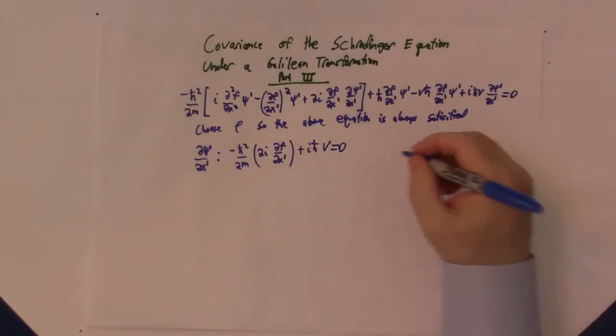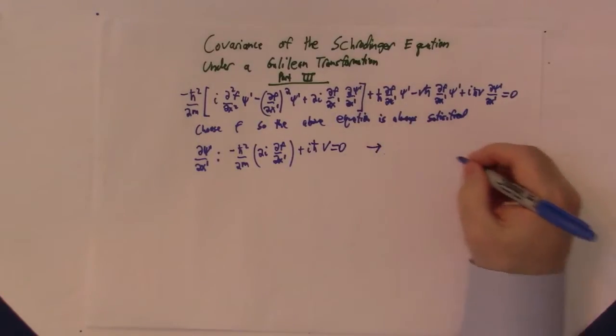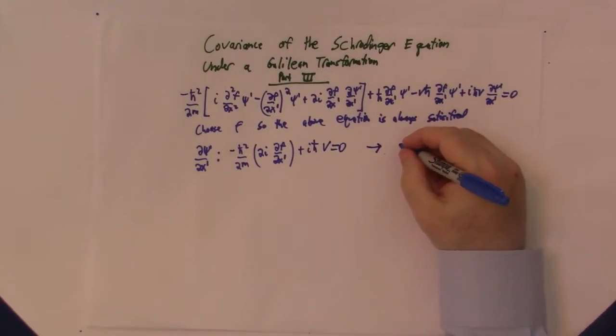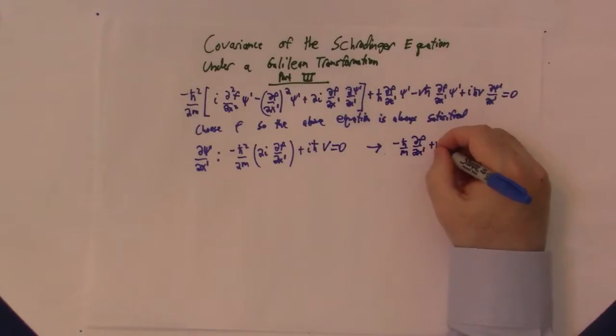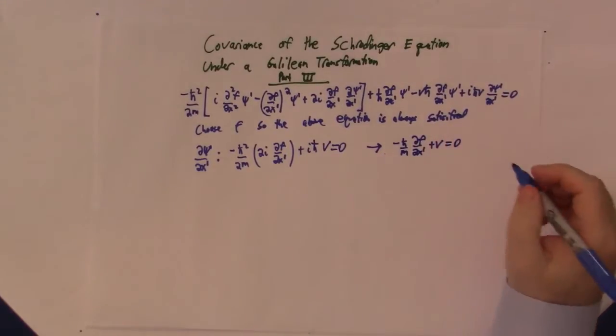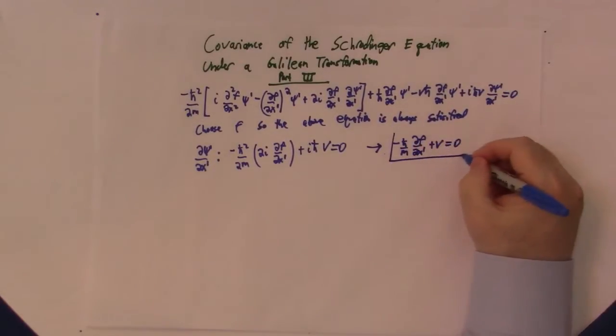So that's our first equation. And this is equivalent to minus h bar over m partial of f with respect to x prime plus v equals zero.